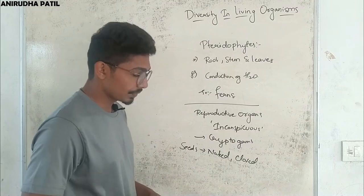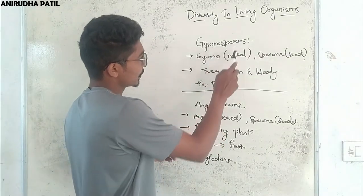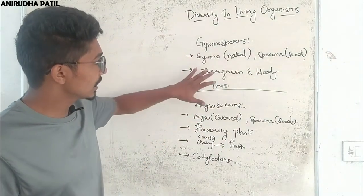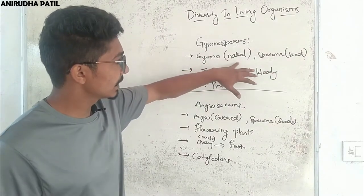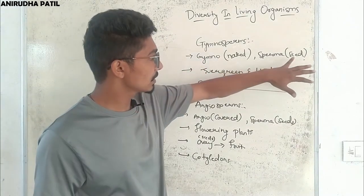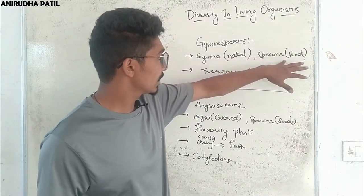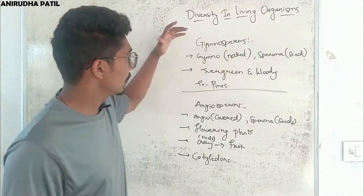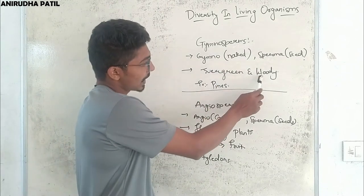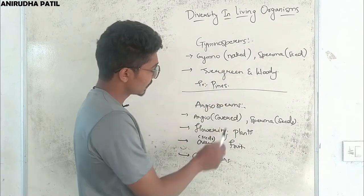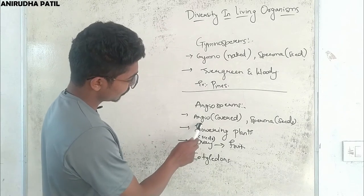The word gymnosperms is derived from two Greek words: gymno, meaning naked, and sperma, meaning seed. Combined, they mean naked-seeded plants. Gymnosperms are evergreen and woody plants. An example is pines.